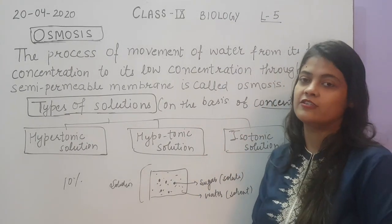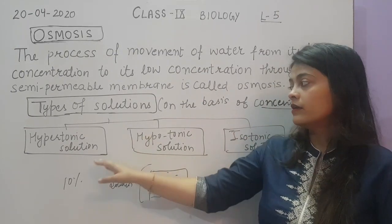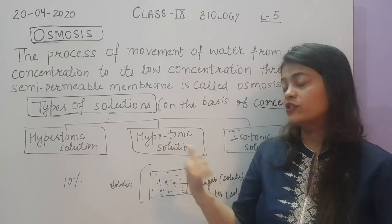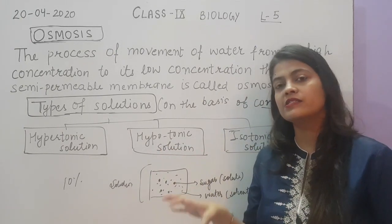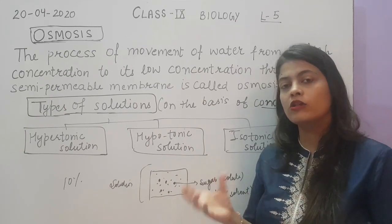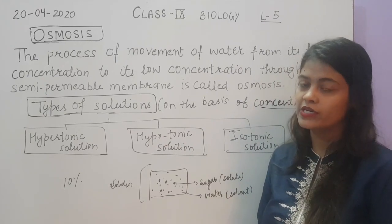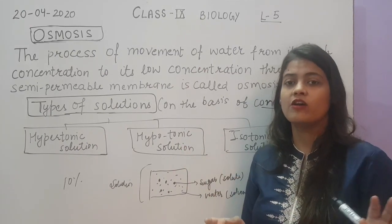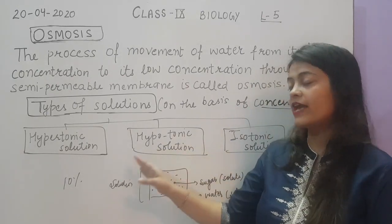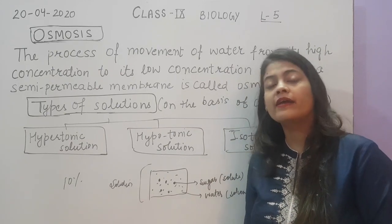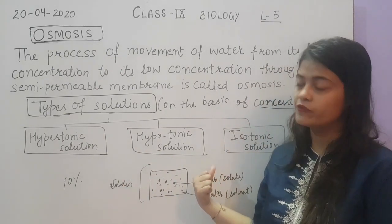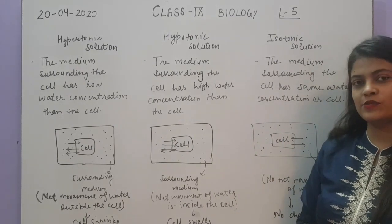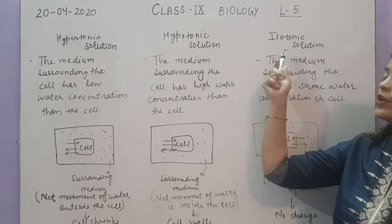On the basis of concentration, there are 3 types of solution: hypertonic solution, hypotonic solution, and isotonic solution. We have compared the concentration of the solution with the concentration inside the cell, because the cell also contains water as solvent and solute particles inside it. On the basis of that comparison — concentration inside the cell versus outside — we have these 3 types of solutions. We will take up each one.